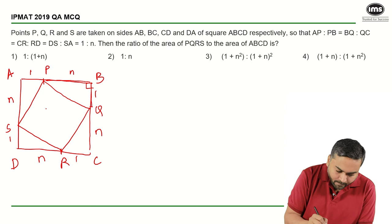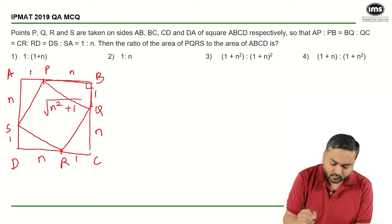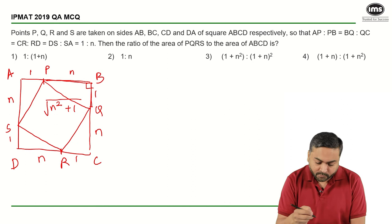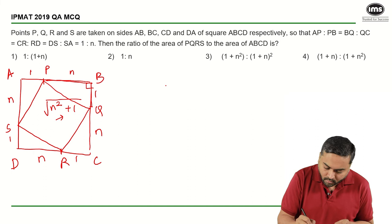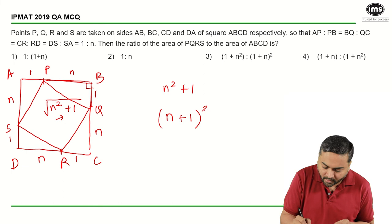So what will be the area of the smaller square, that is PQRS? It will be nothing but the square of this value, that is n² plus 1. And what will be the area of the bigger square? It will be (n+1)² and that is the required ratio that is given by third option, as easy as that.